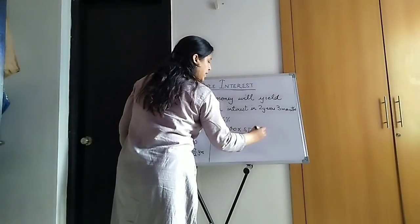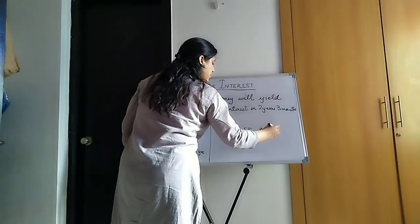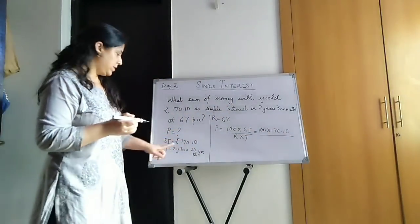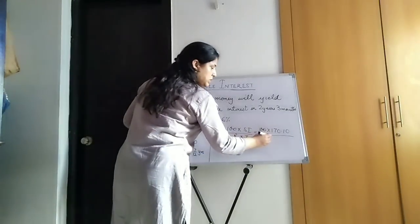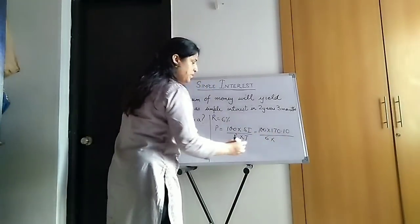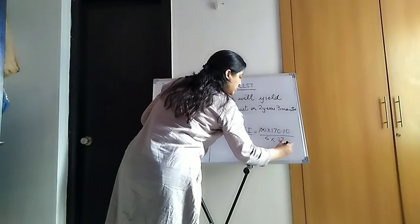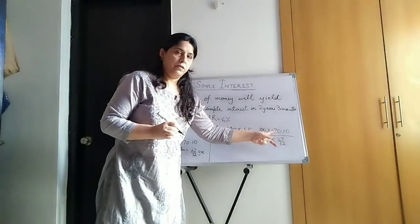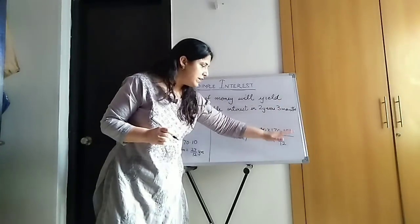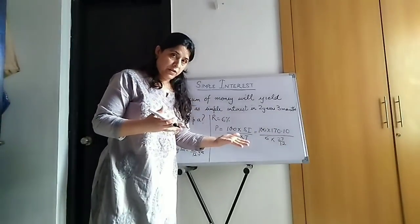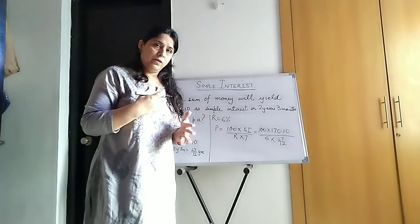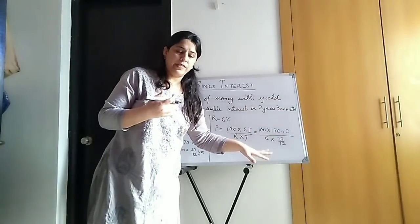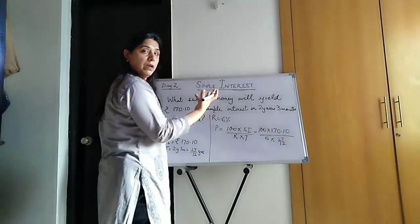So 100 into SI is 100 into 170.10. Rate is 6%, so 6. And time is 27 upon 12. Now, children get confused here. How to write this? You all know that when something is divided by a fraction, we multiply by its reciprocal. So multiplying, divided by this means into 12 upon 27. So 12 goes in the numerator.